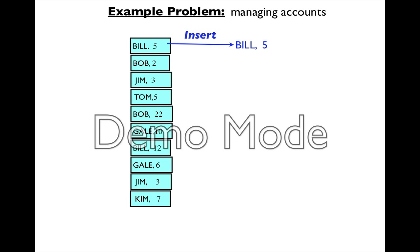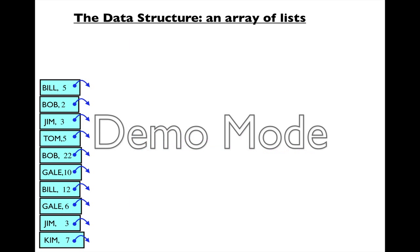Initially when Bill comes, you have to insert Bill into the table. The second time Bill comes, you have to identify that Bill was here before, find the right record, and add to the old number five the new number twelve to get the sum. So how are we going to do that?